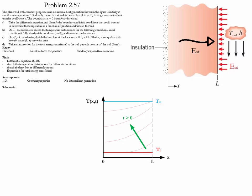The second part of the problem is to sketch temperature distributions for different conditions. The first condition is when time equals 0. At t = 0 the temperature is constant, so the temperature profile will be a horizontal line throughout the whole wall at value Ti. The second condition is as time increases.